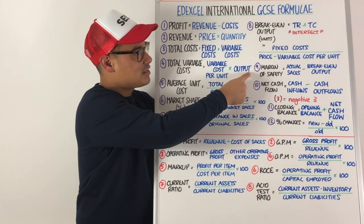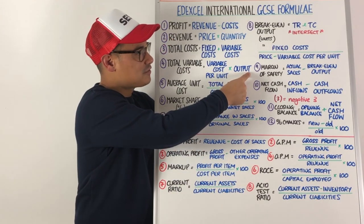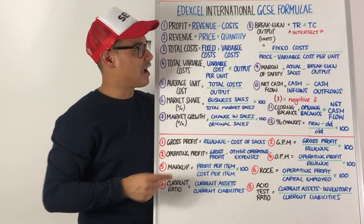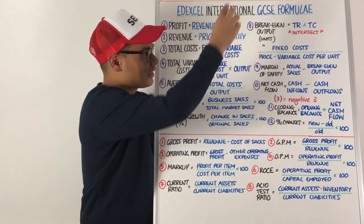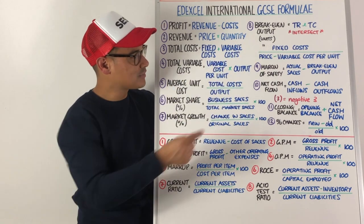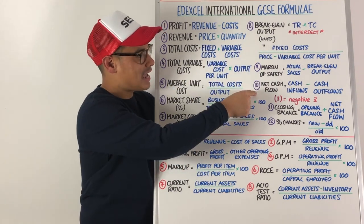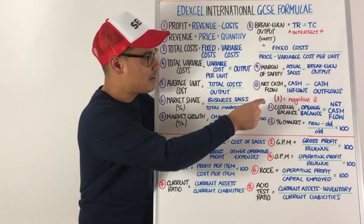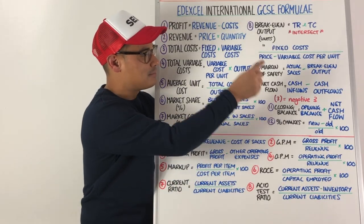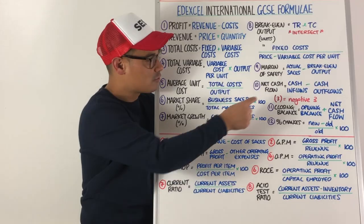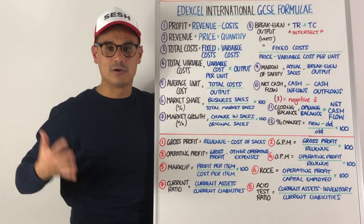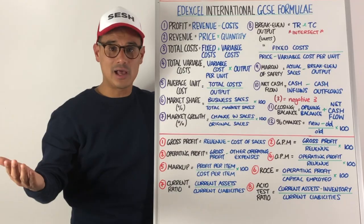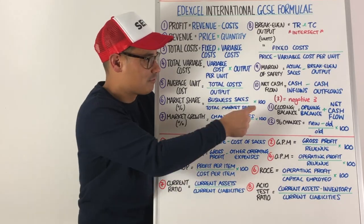Sticking with breakeven — number nine is margin of safety. Margin of safety is your actual sales minus your breakeven output. Number ten: net cash flow is your cash inflows minus your cash outflows. Remember, if a number is in brackets that means it's negative — so brackets three would mean negative three. If it's positive, it'll just be expressed normally.